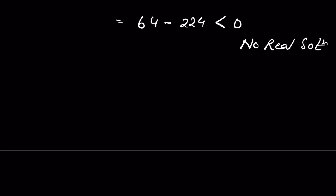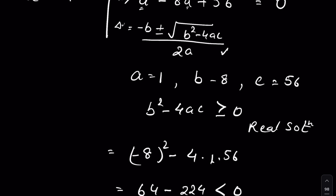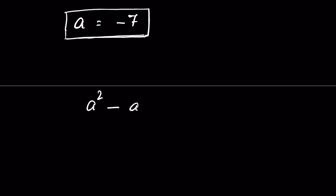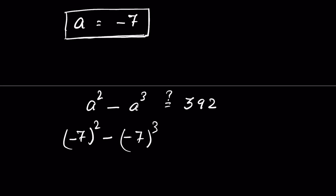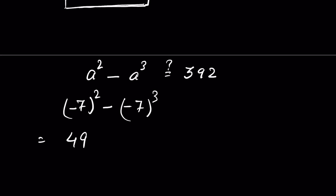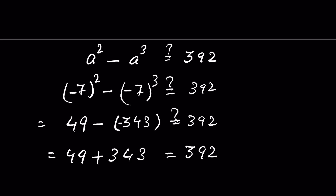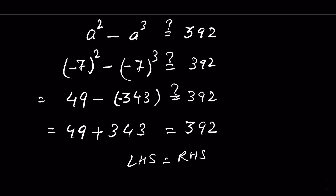Therefore the only real solution is a = −7. Verifying: a² − a³ = (−7)² − (−7)³ = 49 − (−343) = 49 + 343 = 392. LHS equals RHS, so our answer is confirmed.